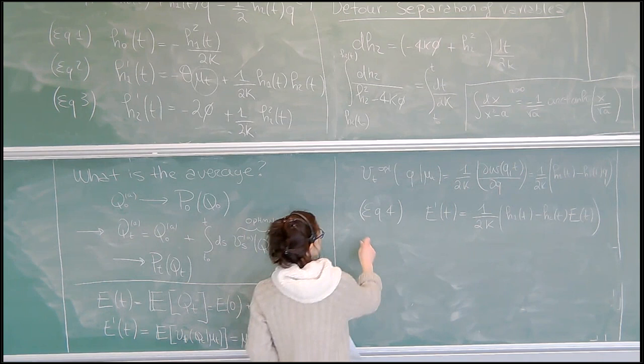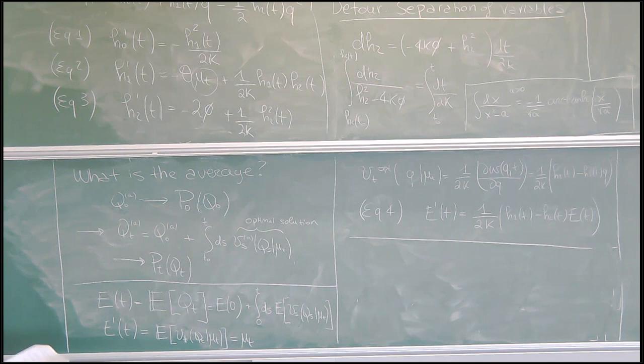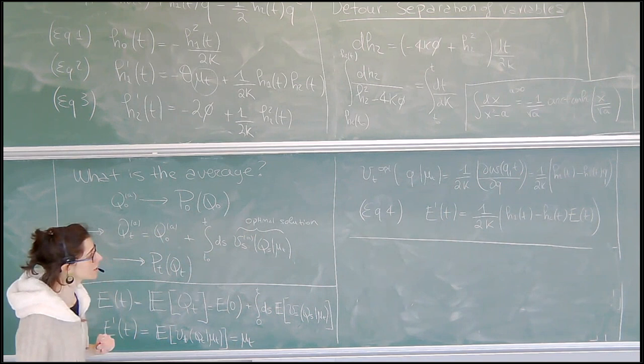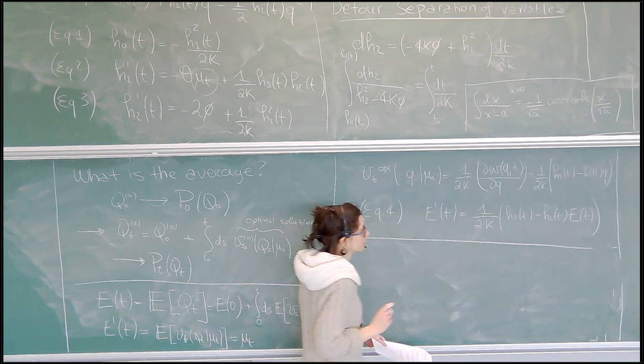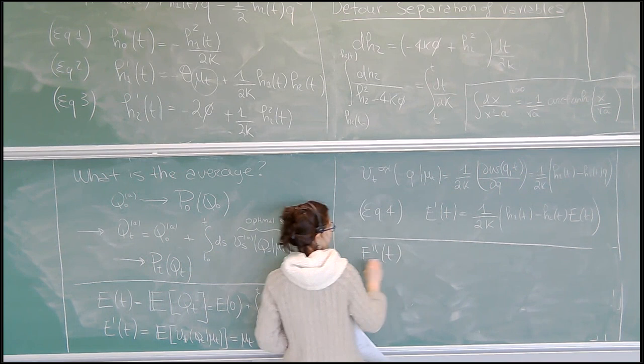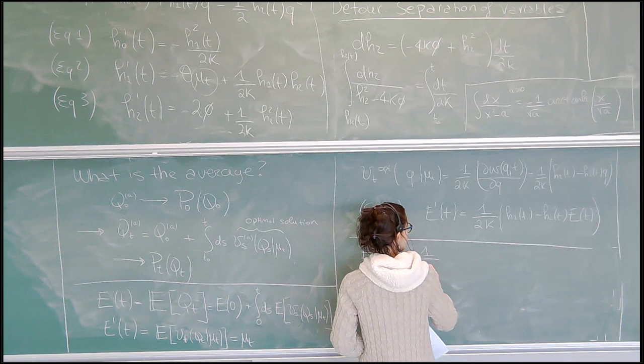This is a fourth equation relating E(t) to H1 and H2. Taking another time derivative of this equation to close it for E(t): E'' equals 1/(2*kappa) times (H1' minus H2'*E minus H2*E'). We know H2 explicitly, and this H1 prime depends indirectly on the function E. So this allows us to obtain a closed equation for E(t) and complete the mean field self-consistent solution.